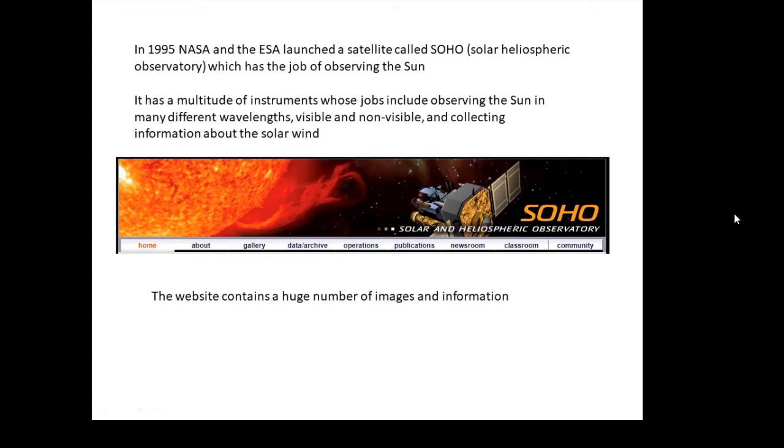Another very safe way to observe the Sun is using another telescope. In 1995, NASA launched a satellite called SOHO, the Solar Heliospheric Observatory, to look at the Sun and take lots of measurements. On the SOHO website there are thousands of images of the Sun in visible and non-visible wavelengths, updated daily and all free. That's probably the best way of observing the Sun, using SOHO from NASA and ESA.